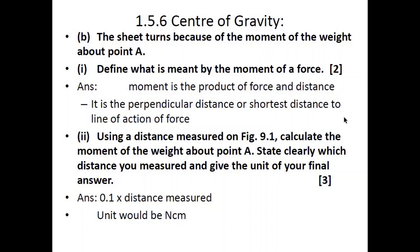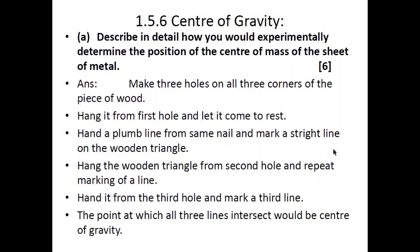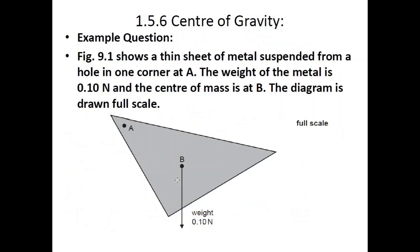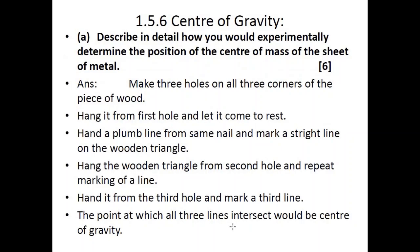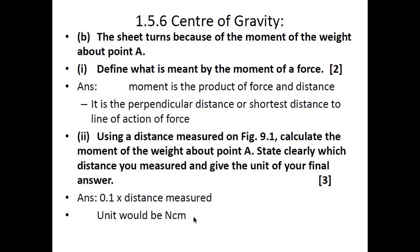The sheet turns because of the moment of the weight about point A. The moment of a force is the product of force and the perpendicular distance — the shortest distance to the line of action of force. To calculate the moment of the weight about point A: measure the distance from A to B using the scale, then multiply that distance by 0.1 N. The unit would be newton centimeter.